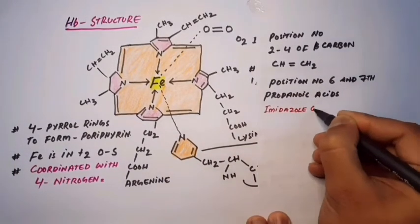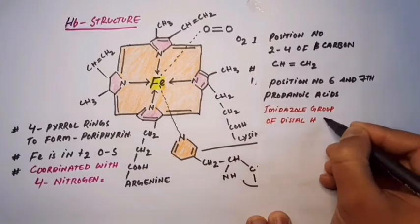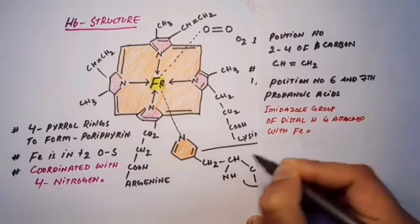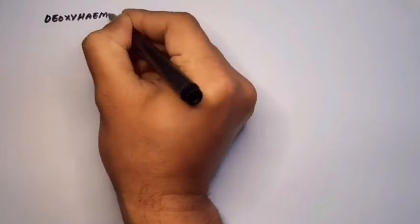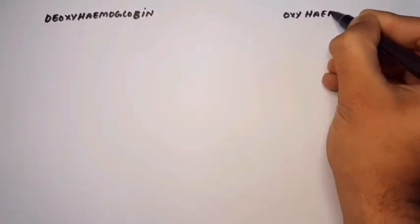The imidazole group of the distal histidine is attached to the central metal atom, iron. Now let us talk about oxyhaemoglobin and deoxyhaemoglobin.